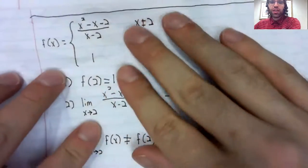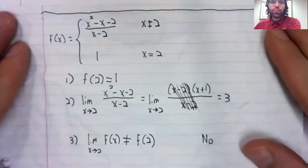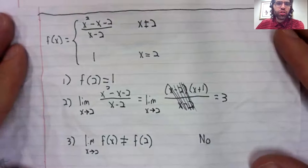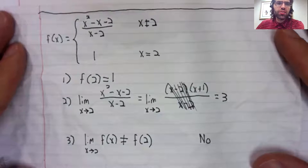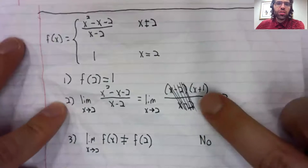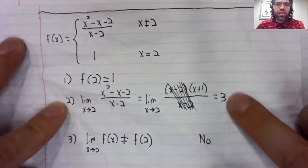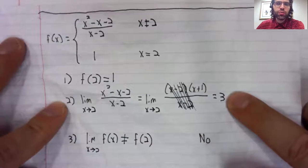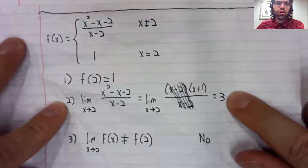Sorry, this is kind of crinkled. But the second function I gave you was this, and what we found was that the limit existed. The limit as x approaches two was three.